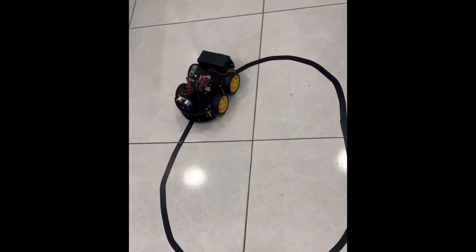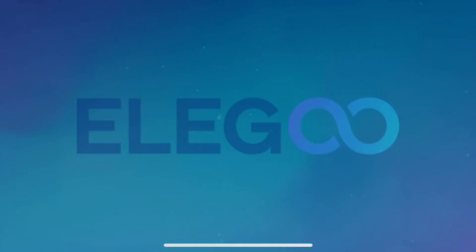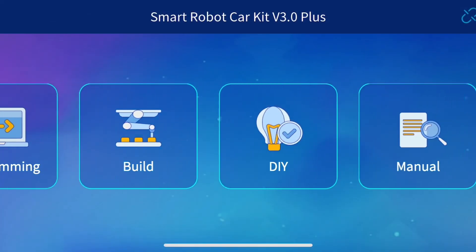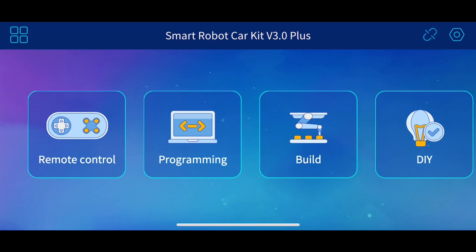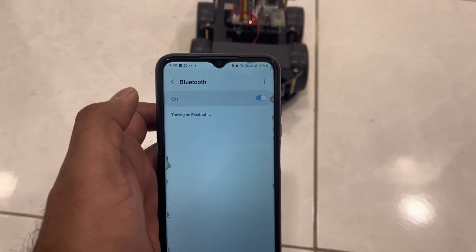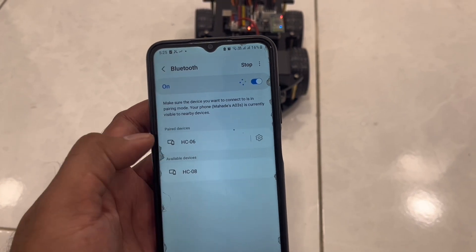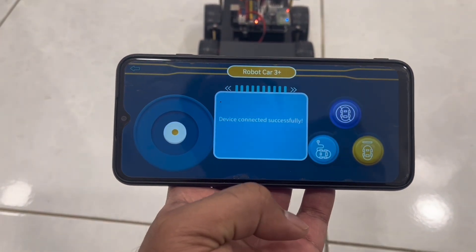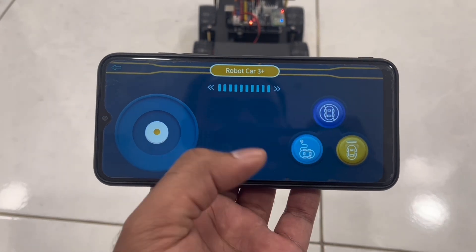Finally, to control the car by mobile, download the Elegoo Kit application. If you open the app you will see it's nicely built-in. Click on remote control option and connect the Bluetooth. After device connected successfully, we can control the robot car from mobile.